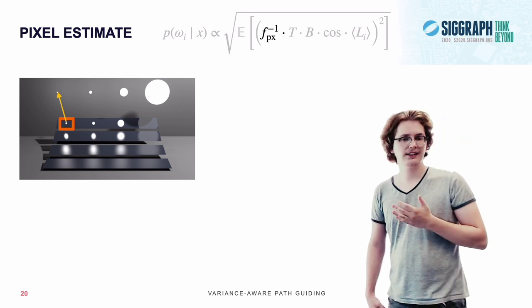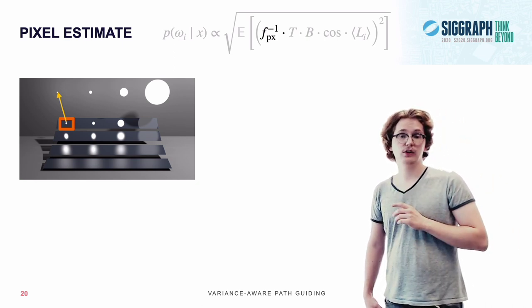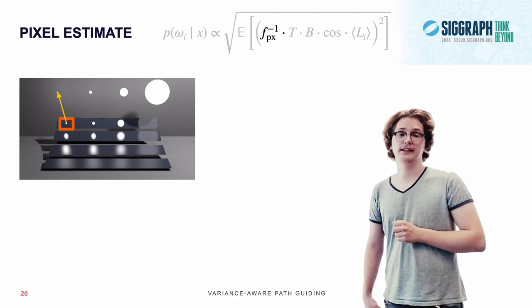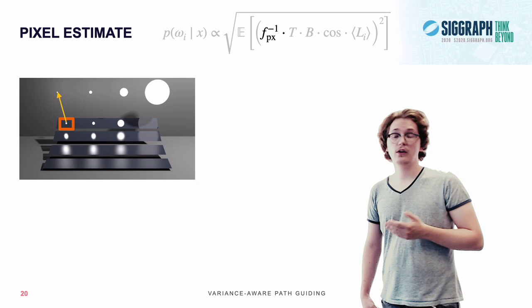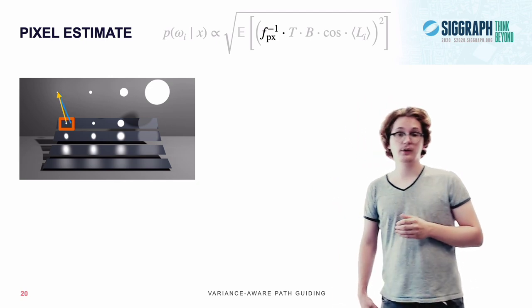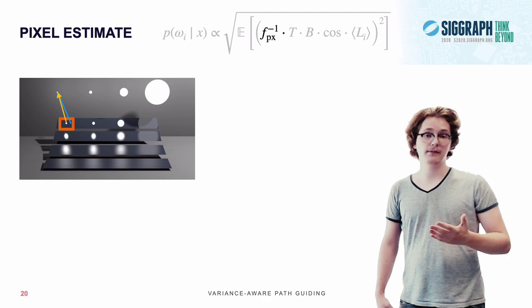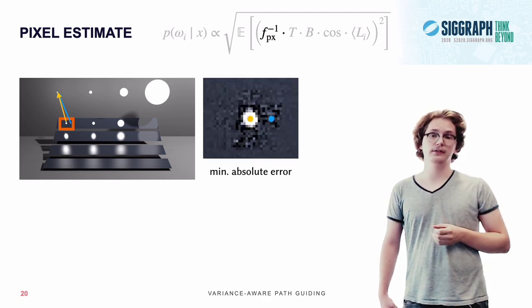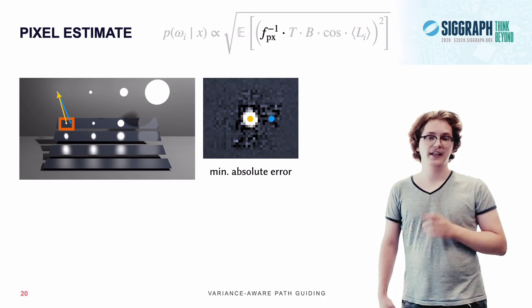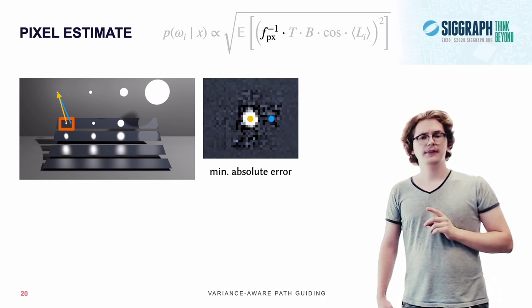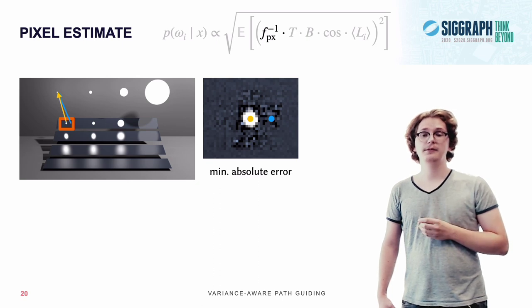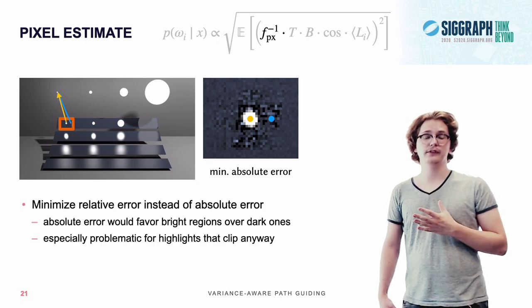That on its own isn't a problem. However, there are also some adjacent points around this highlight, which are also in this guiding cache. And they are also forced to exclusively sample this light source, which can create a problem, as for them other light sources might also be important, leaving us with artifacts around these bright highlights. But, by dividing by the pixel estimate, we are actually instructing guiding to minimize a relative error, instead of an absolute one.